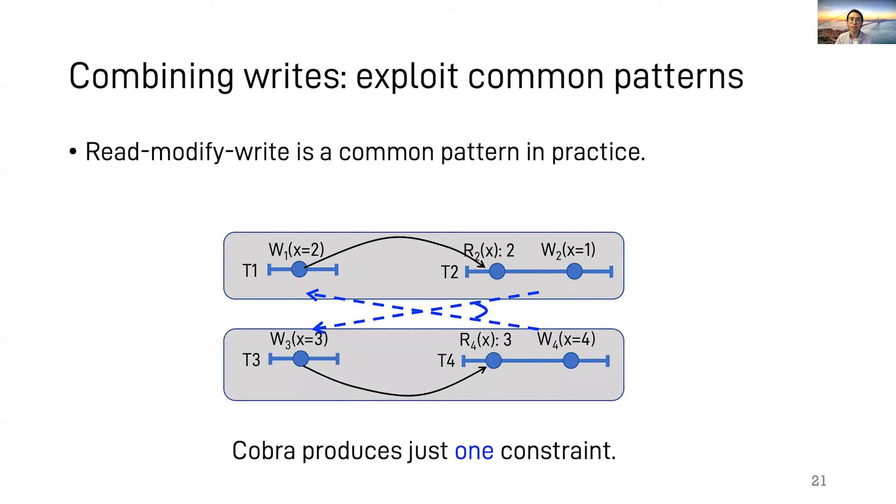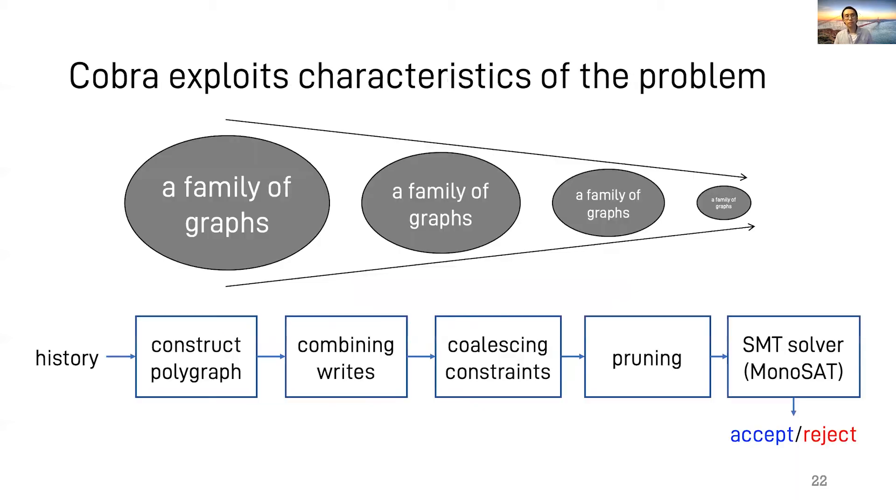For example, in this case, Cobra can summarize the constraints to be one. This is combining writes. One may wonder, why cannot SMT solver do what we do? The answer is that Cobra understands this specific problem better than SMT solvers. In particular, Cobra leverages the semantics of transactions as well as common patterns in the workload.